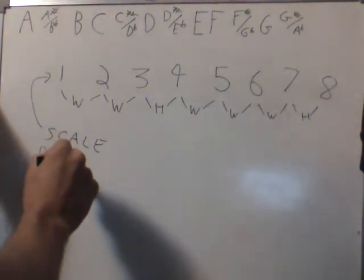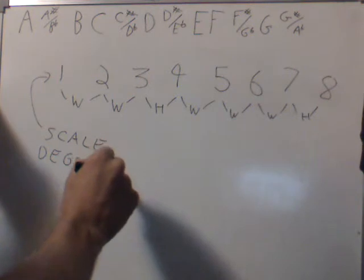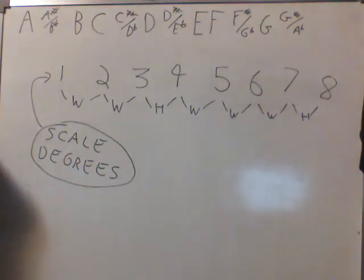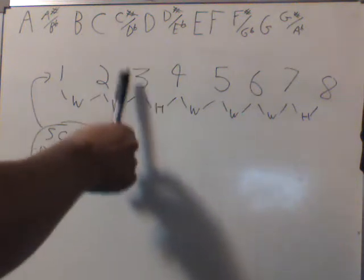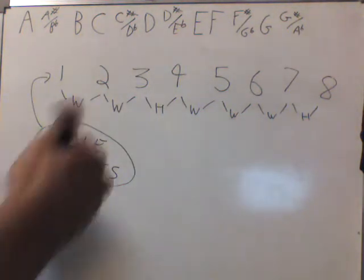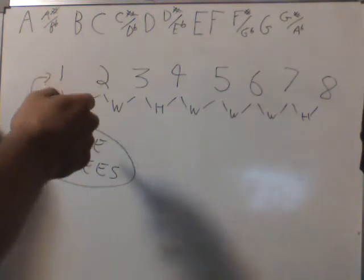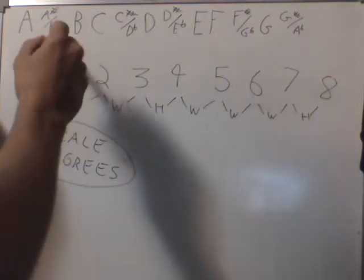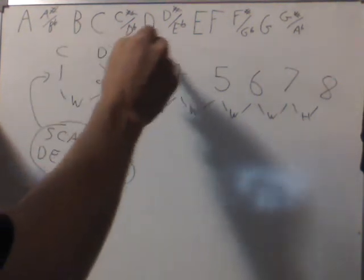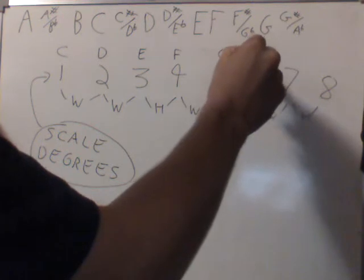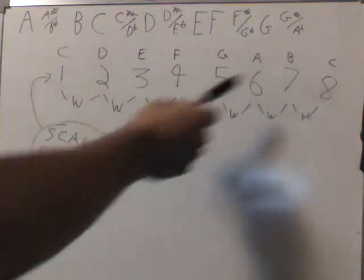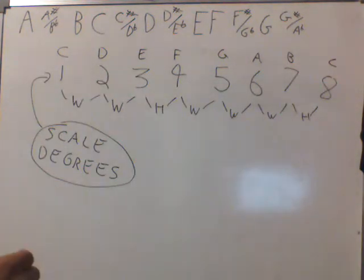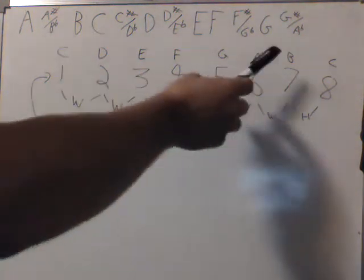So these numbers up here, they are scale degrees, and this is what they are called: scale degrees. And the best way to say it, or intuitively say it, is that they are degrees of a scale. If you say it like that, I think it makes more sense. They are degrees of the scale. For example, the third of the scale is right there. The third degree of the C major scale is an E.